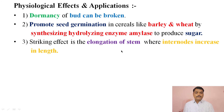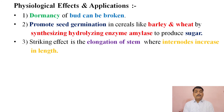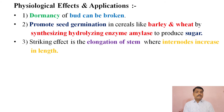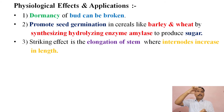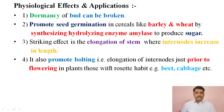Another effect of gibberellic acid is the elongation of stem, where the internode region increases. The stem elongation occurs because the internode region is the intercalary meristematic tissue. It also promotes bolting, that is the elongation of internodes just prior to flowering in plants with a rosette habit, for example beet and cabbage.